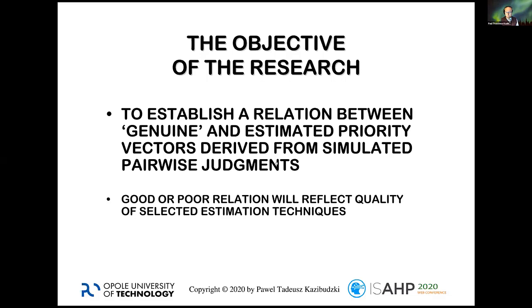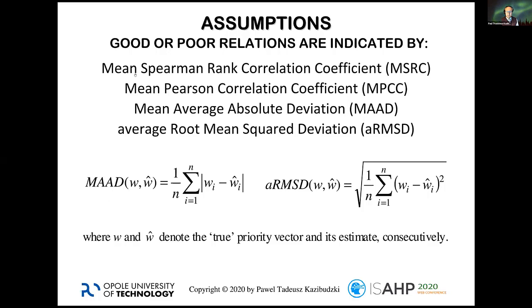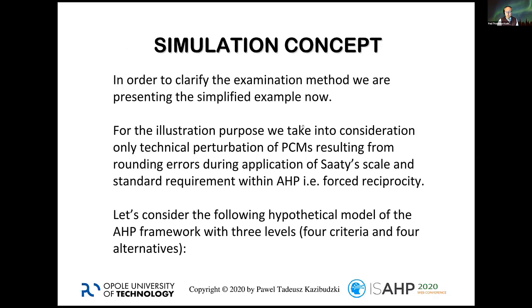Good or poor relations, I thought, would reflect the quality of selected estimation techniques. I proposed such measures as mean Spearman rank correlation coefficient between estimated and genuine priority vectors, mean Pearson correlation coefficient, mean average absolute deviation between those vectors, and average root mean square deviation.